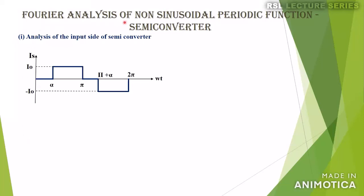In this lecture we will discuss the Fourier analysis and some performance parameters of a semi-converter. This is the waveform for the supply current IS for the semi-converter. During the positive half cycle, from alpha to pi, the magnitude of IS is I0, and during the negative half cycle, from pi plus alpha to 2pi, the magnitude of IS is equal to minus I0.